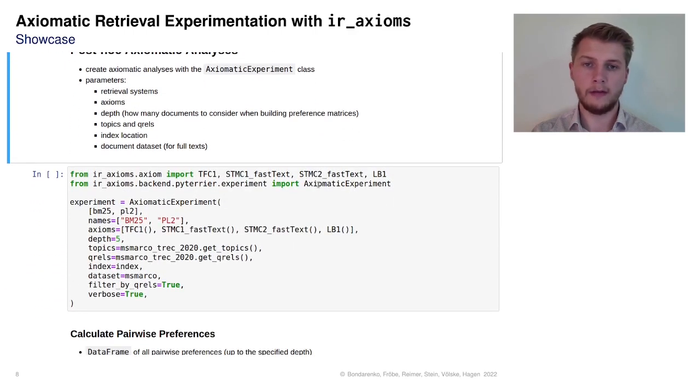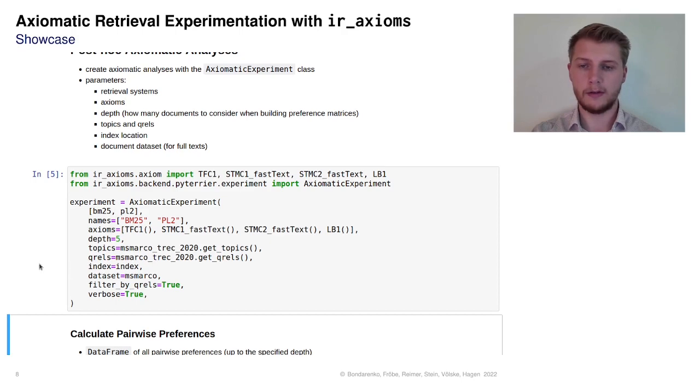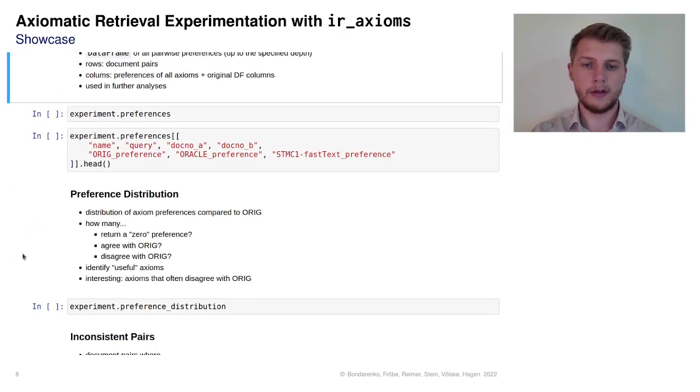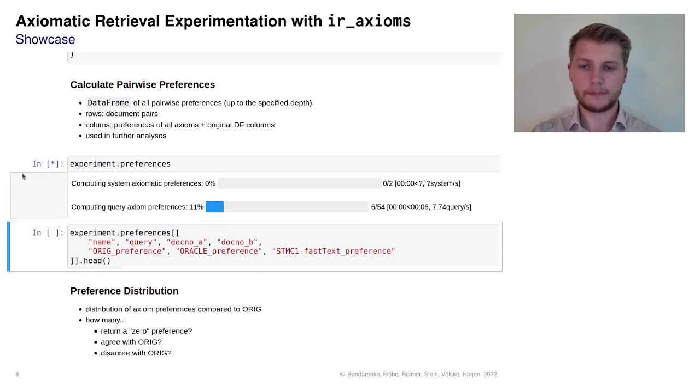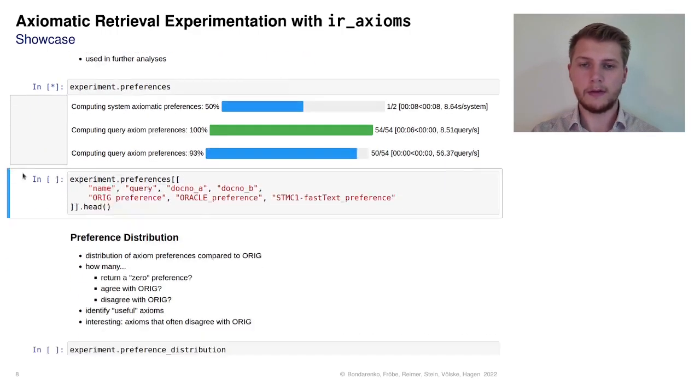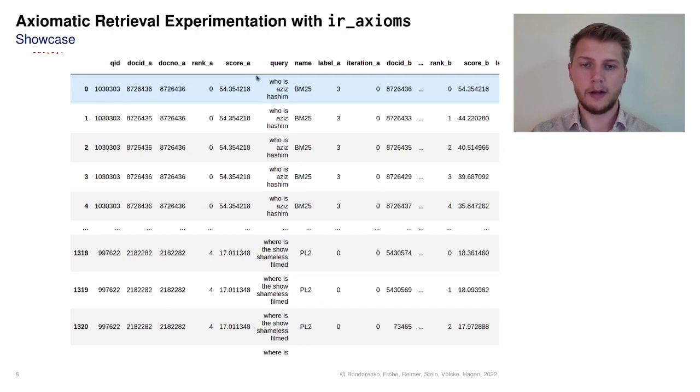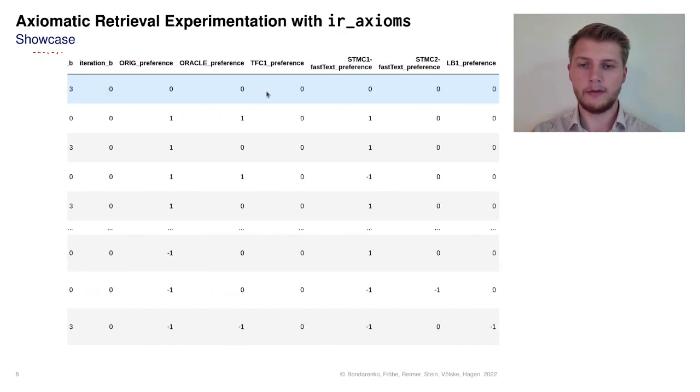For post-hoc axiomatic analyses, we create an axiomatic experiment by specifying the rankers, axioms, depth, topics and queries, index, and document dataset. Let's first compute a data frame of all axiomatic preferences up to the specified depth. Computing preferences can take a while, depending on the number of rankers, topics, axioms, and depth.